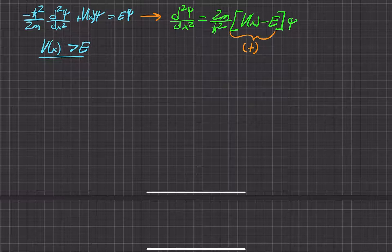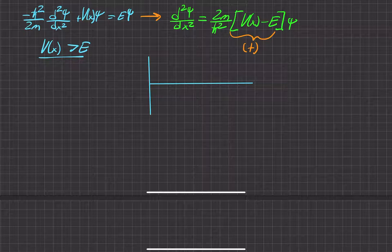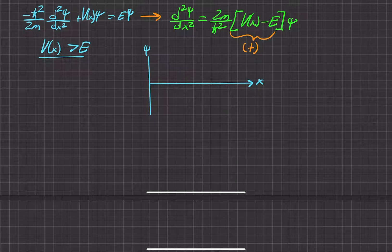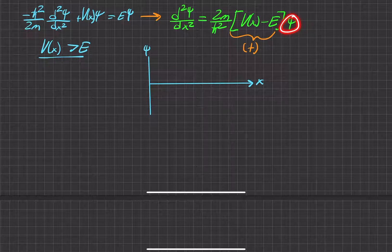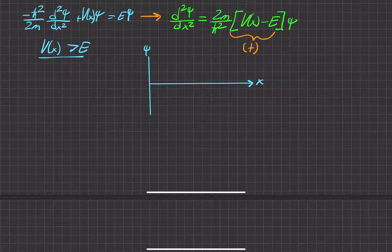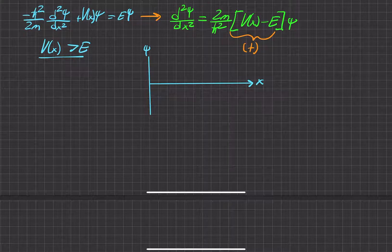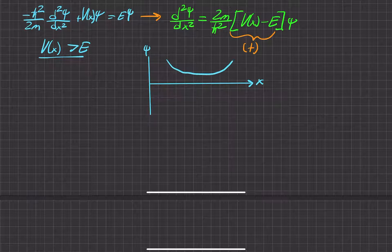Let's go ahead and draw this wave function, with psi on the vertical axis and x on the horizontal axis. If we have a positive psi — a positive wave function — that means it exists in the upper quadrant. And we know that the curvature is positive, so the wave function is going to look something like this, curving away from the axis.